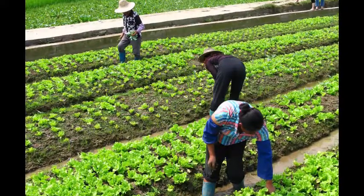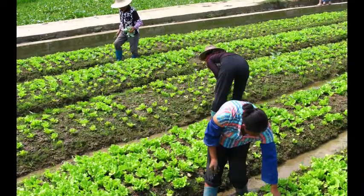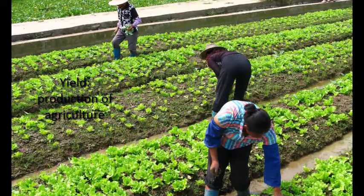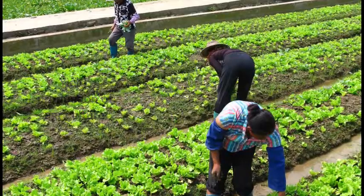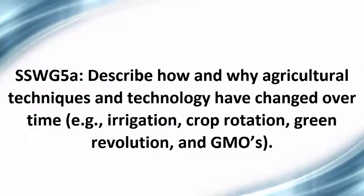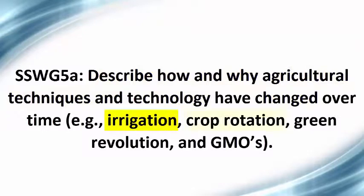Students should understand that the methods for producing agriculture have evolved over time, increasing efficiency and yield, resulting in the ability to support larger populations and increasing life expectancies. For this video, we will look at each specific example provided in the standard: irrigation, crop rotation, the green revolution, and finally genetically modified organisms, or GMOs.